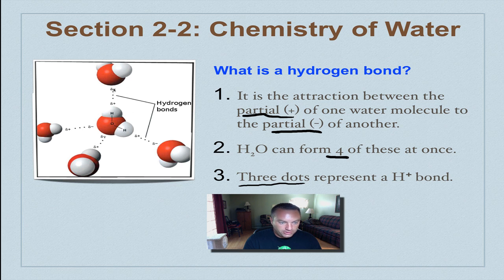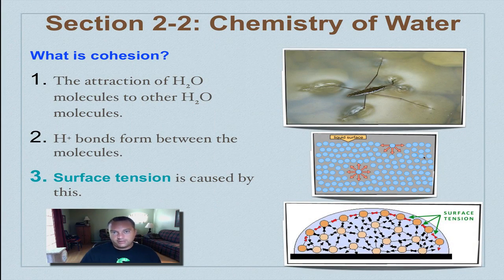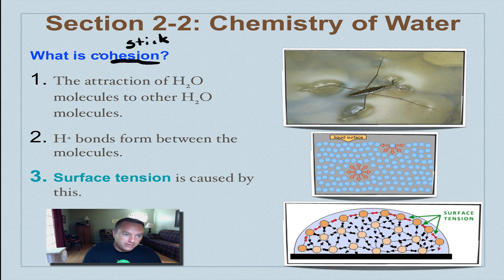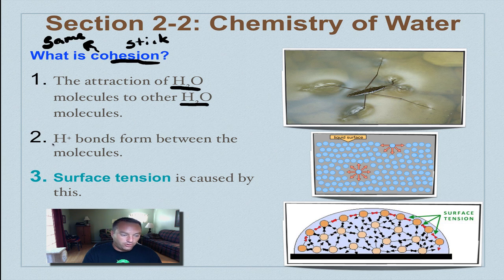One water molecule has two positives and two negatives, so it can form four hydrogen bonds. Another unique property of water that comes from polarity is cohesion. The word 'hesion' simply means to stick, like adhesive tape, and 'co' means the same. So with cohesion, you have something sticking to something just like itself. When we have cohesion, we have water molecules sticking to or being attracted to other water molecules, and these are formed through hydrogen bonds.